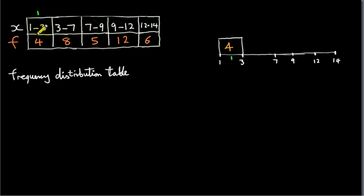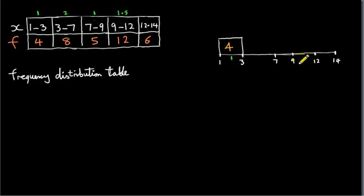If this is our base width of 1, then the next interval is twice as wide, so it has a width of 2. The interval 7 to 9 is our unit width. For 9 to 12, we compare 3 to 2: multiplying 1 by 3 over 2 gives 1.5. So our interval 9 to 12 is 1.5 times the width of the interval 7 to 9. Our last interval has a width of 1, the base width.